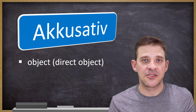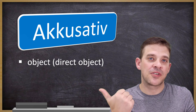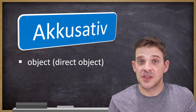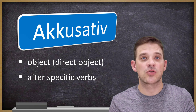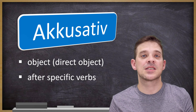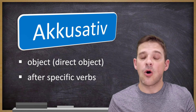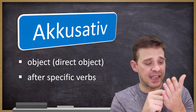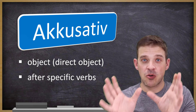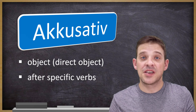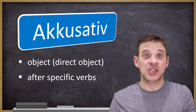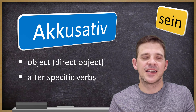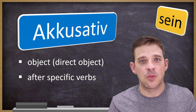Now let's go to accusative. As I said, it's an object — often called the direct object. Accusative is also used after specific verbs. Importantly, almost all German verbs require the accusative case, so there's absolutely no need to memorize a list of accusative verbs. The only thing you need to do is the opposite — memorize which verbs are NOT accusative. One important exception is 'sein' (to be), which actually takes nominative.